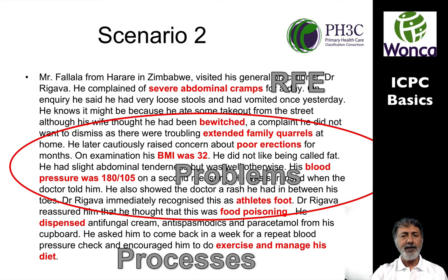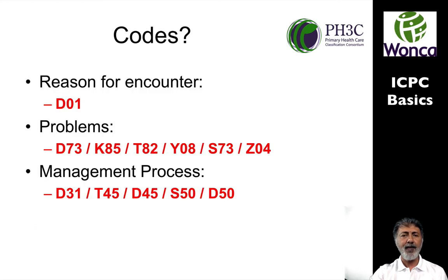In scenario two, the reason for encounter is Mr. Falala complaining of severe abdominal cramps. The problems on assessment are: he feels he's been bewitched, extended family quarrels, poor erections, BMI over 32, blood pressure 180/105 on a second check, athlete's foot, and Dr. Ugava thinks he also has food poisoning. In terms of process, he's dispensed some medicines and advised exercise and diet. The reason for encounter is D01. Problems are D73, K85, T82, Y08, S73, Z04. Processes undertaken: D31, T45, D45, S50, D50.